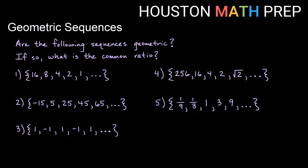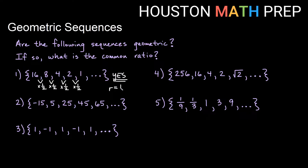Looking at some examples to figure out if they're geometric or not, and if they are, we'll say what the ratio is. In my first one, I start at 16: 16, 8, 4, 2, and 1. If you look at it, you might be able to see that if I multiply by one half each time I am getting the correct numbers in the sequence. So this one is geometric. If I take any term and divide by the term before it, I get one half. So yes, this is geometric, and the common ratio is one half.